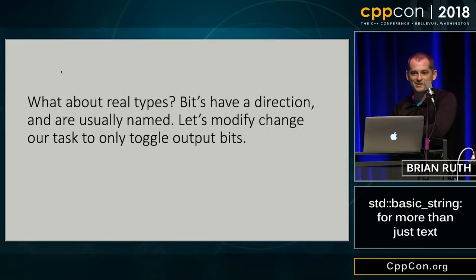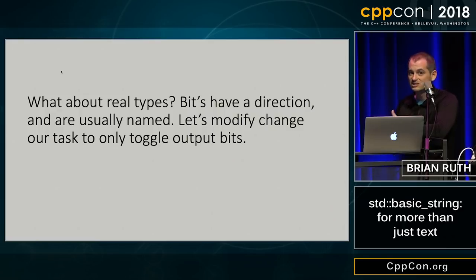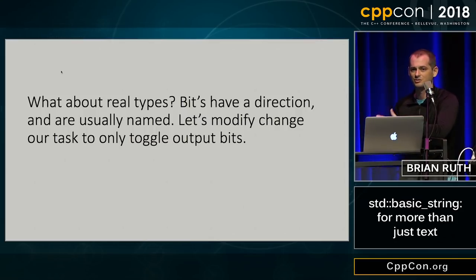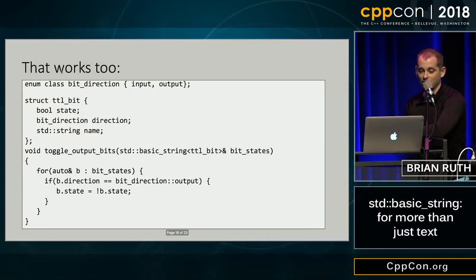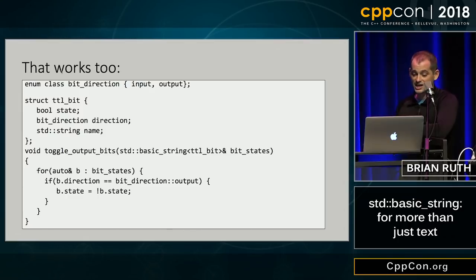But what about real types? Boolean is not much different than a character. Bits have a direction and are usually named so you know what they do. Let's modify the task — we just want to toggle output bits. That works too. You have a class for bit direction, a string in there for a name, a struct — you can throw it in and it works almost exactly the same as a vector.